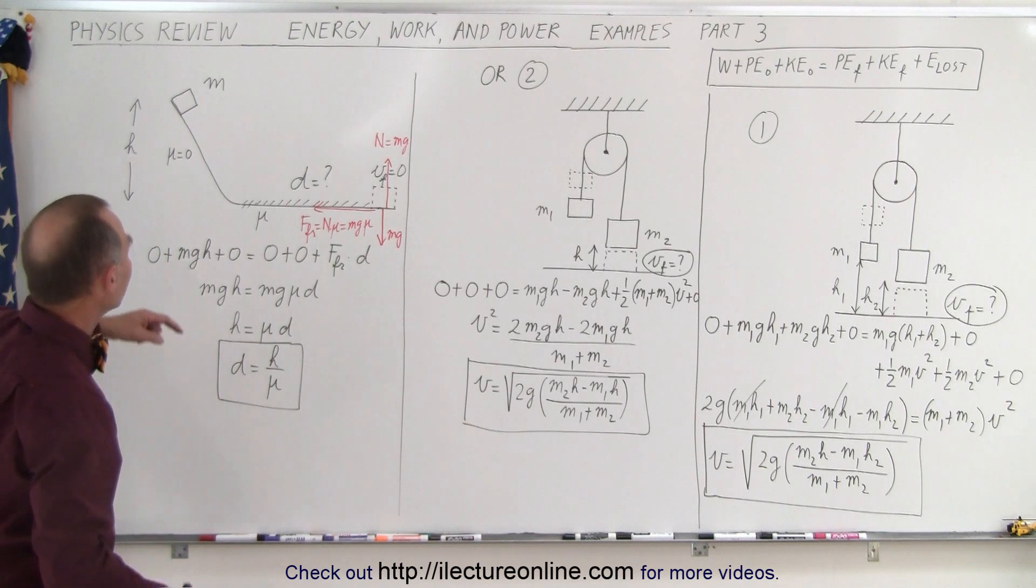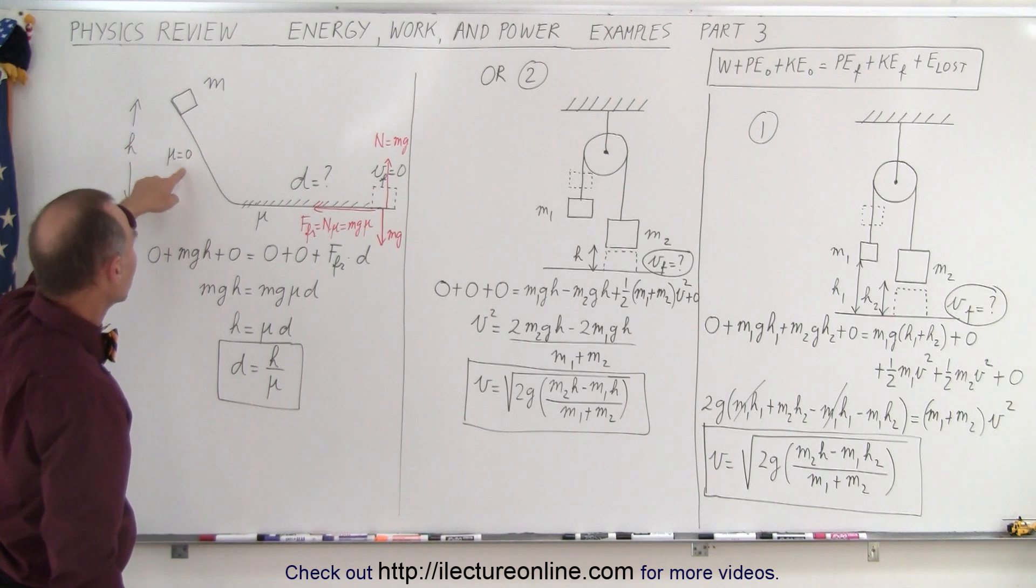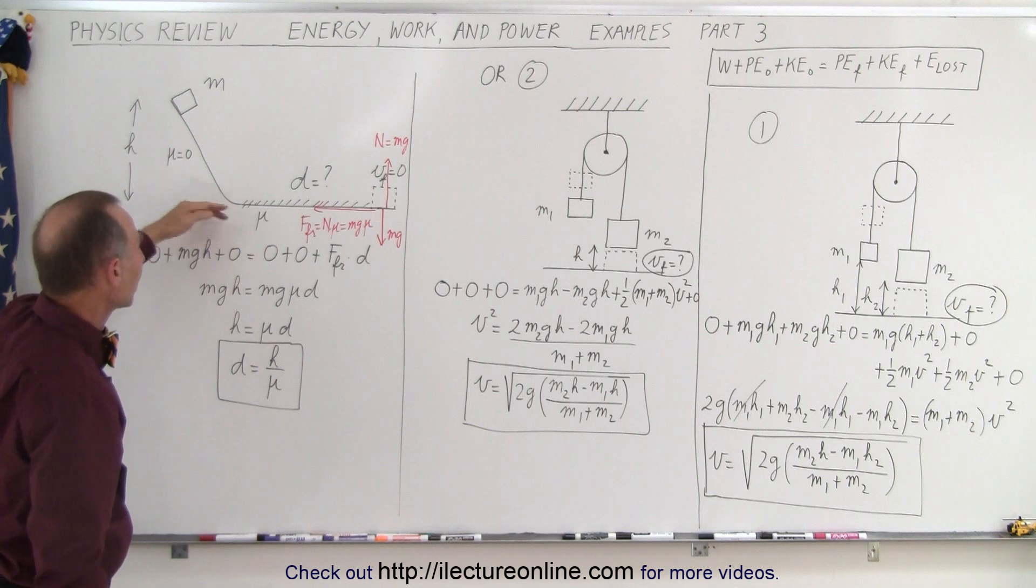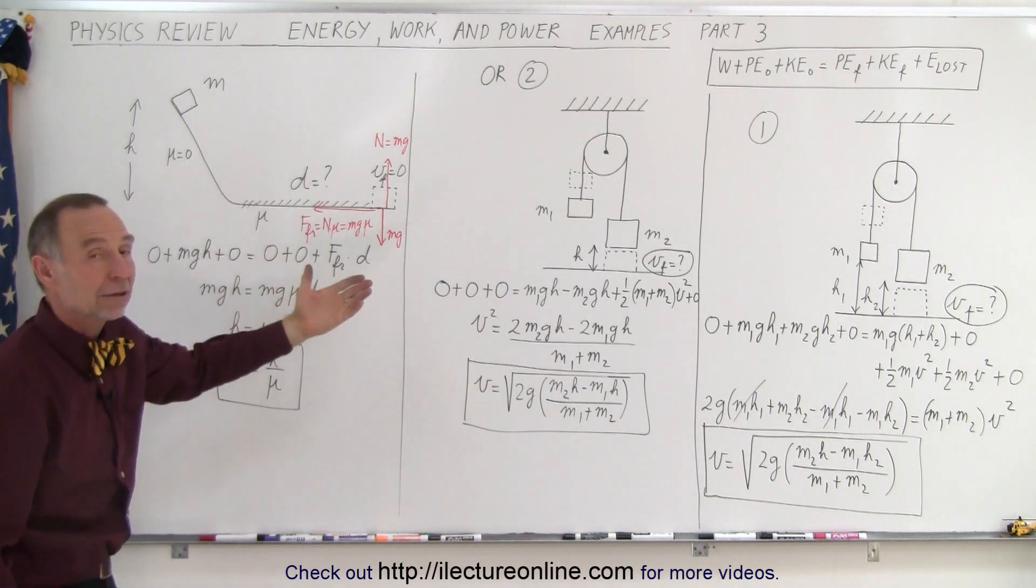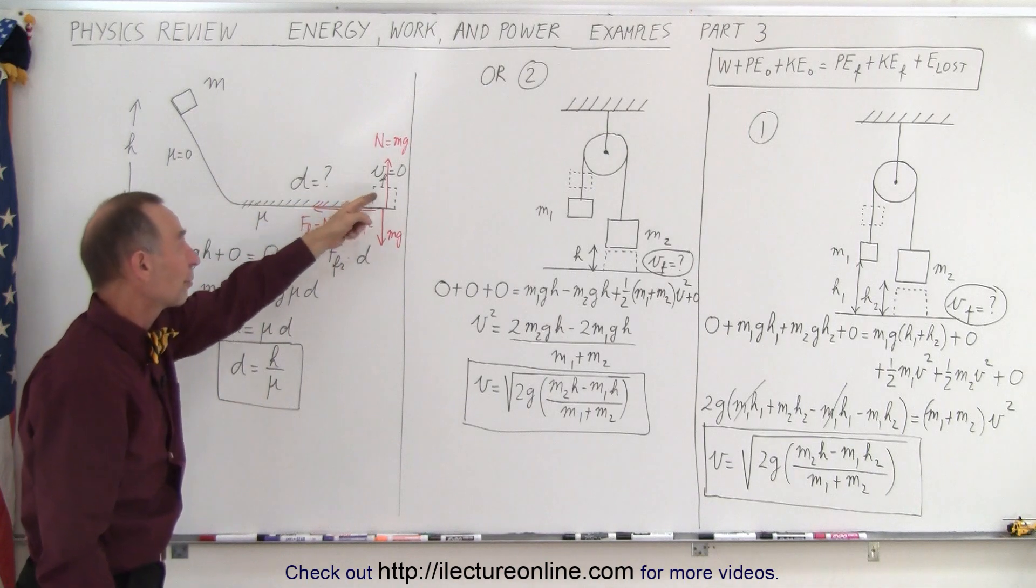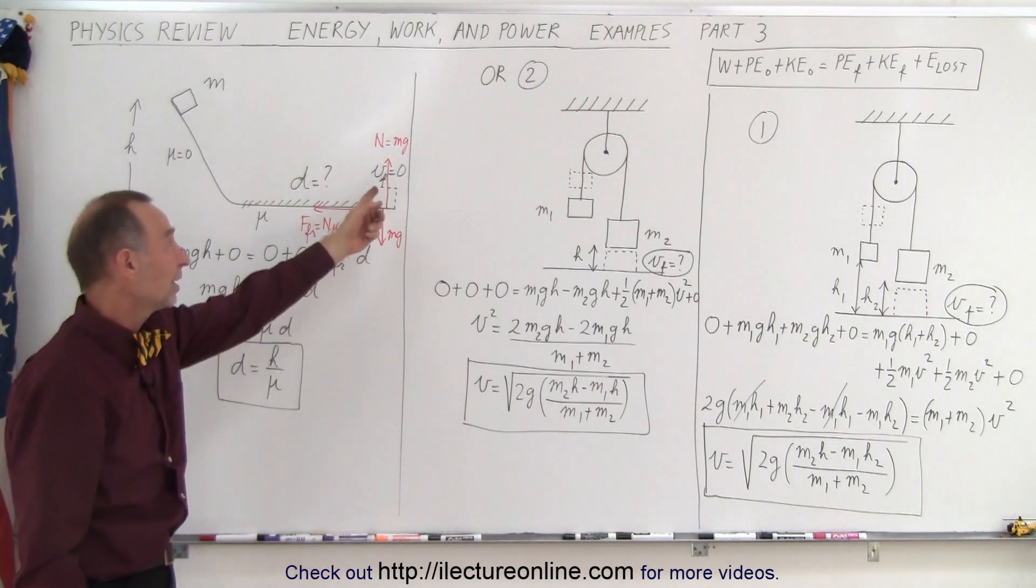Another very typical example is that a block slides from an incline where there's no friction, hits the bottom where there is friction on the horizontal surface, and now they ask how far will the block slide before it comes to a stop. Final velocity is equal to zero.